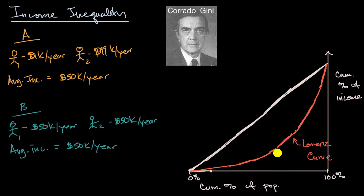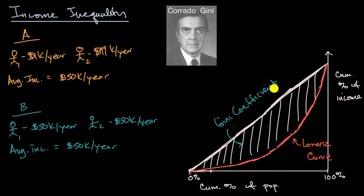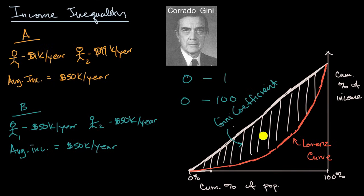What Gini said is that the difference between the Lorenz curve and the perfect equality line is a measure of income inequality. He looked at the area between the line and the Lorenz curve and asked what percentage that area is of the total area under the line. This percentage is called the Gini coefficient, typically quoted as a value from zero to one — or sometimes zero to 100. A Gini coefficient of zero means the area between the Lorenz curve and the line is zero, meaning we have a perfectly equal income distribution.